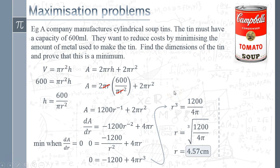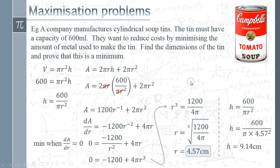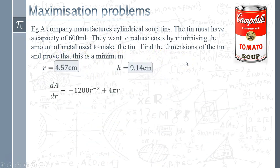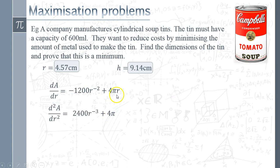The question asks for the dimensions of the tin, so having found r we can now find h using h = 600/(πr²). Substituting in gives us a radius of 4.57 cm and a height of 9.14 cm. To prove this is a minimum as the question requires, we differentiate a second time: bringing the −2 to the front makes the first term positive (2400/r³), and the 4π term differentiates to 4π. So d²A/dr² = 2400/r³ + 4π.